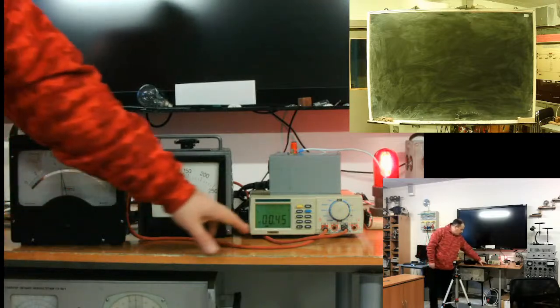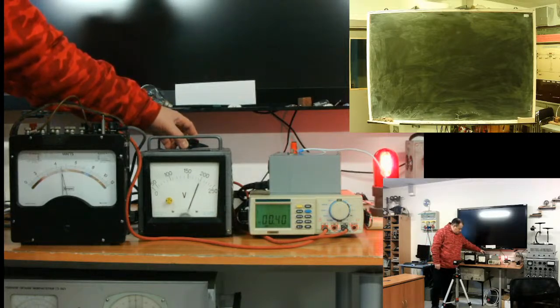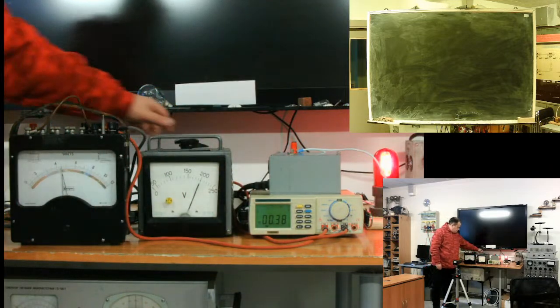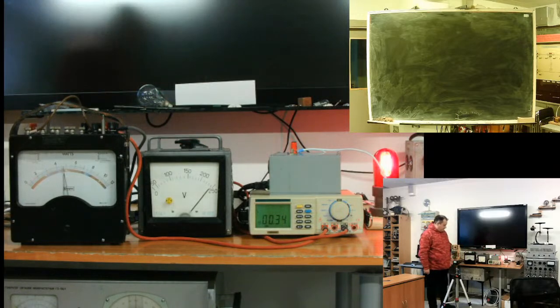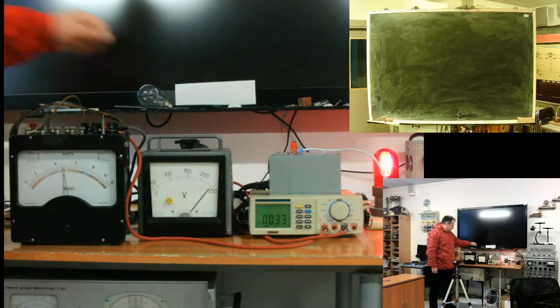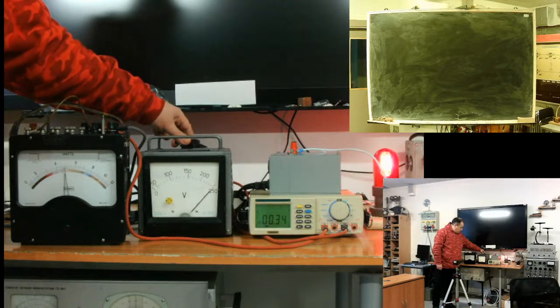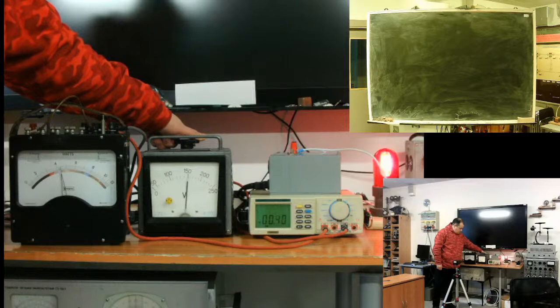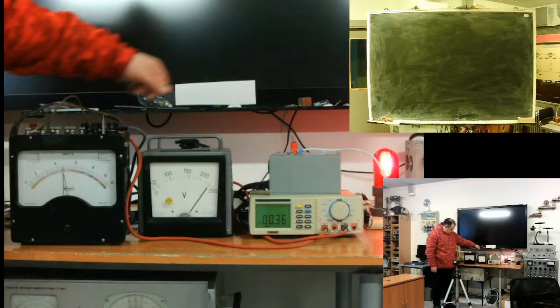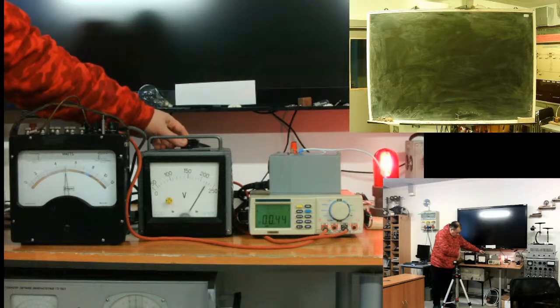45 watts of power and 0.5 amps consumption. 200 volts - 0.38 consumption. 230 volts, 0.34 consumption, power still 46 watts. So take a look: voltage down, current up. Voltage up, current down. Let's take a look on the power: voltage down, power stays. Voltage up, power stays, unchanged.